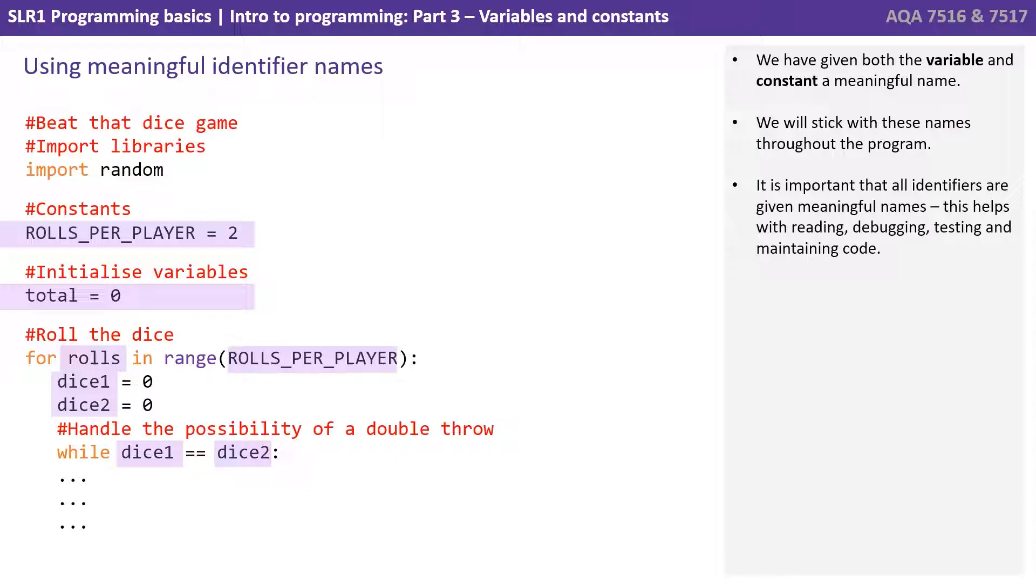For roles in range, dice1 equals zero, dice2 equals zero, while dice1 is equal to dice2 - we know what the program is doing. If we had given these variables names like A and B, it would be less obvious what the program was doing by looking at the code.